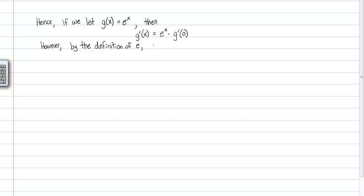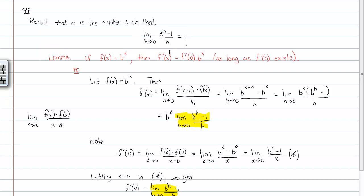However, by the definition that we have for the constant e, the slope of the function e to the x at zero has to be one. In other words, g prime at zero, which is the limit as h approaches zero of e to the h minus one over h, must be one by our definition. If we go back a page, we can see that. This is the definition I'm talking about: the limit as h approaches zero of e to the h minus one over h is actually one, which is what we wanted.